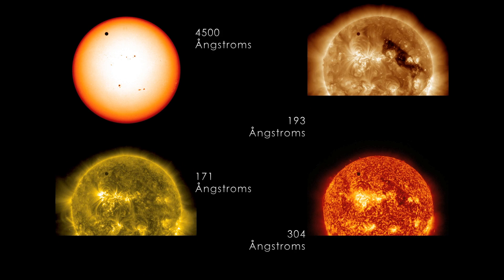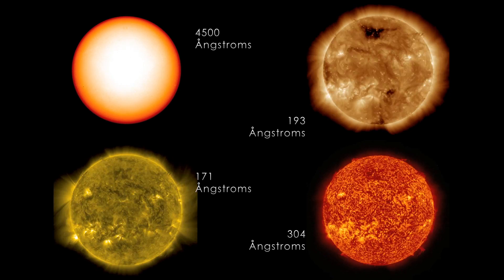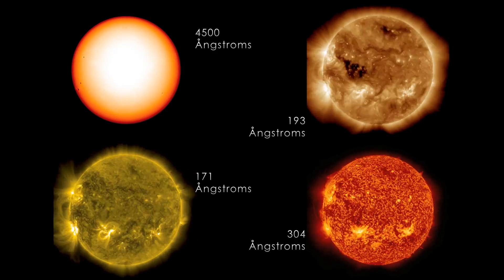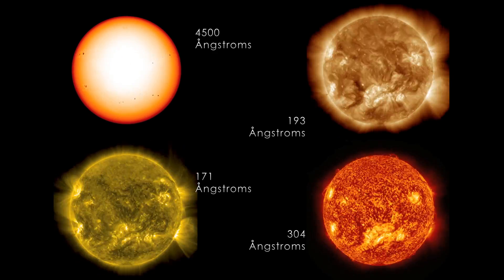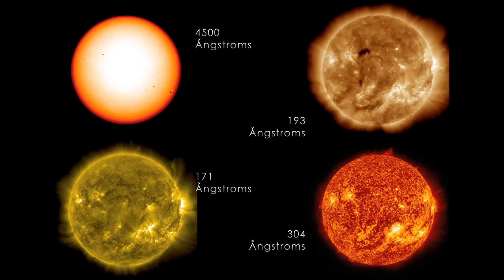Did you see that little tiny black dot that's close to the North Pole of the Sun? That's Venus. Every hundred years or so, it moves in front of the Sun, giving us this rare and amazing astronomical event.